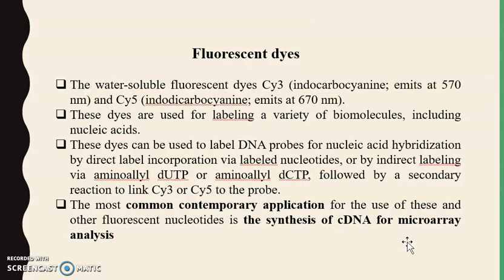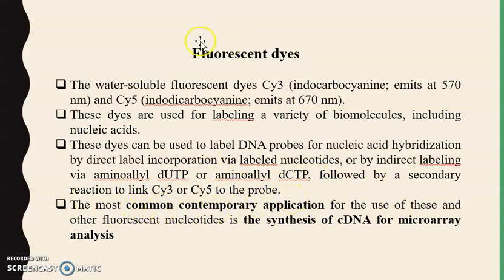Some other methods use fluorescent dyes. Ubiquitous dyes such as indocarbocyanin Cy3 and Cy5 can be used as fluorescent dyes to label a variety of biomolecules including nucleic acids. These dyes can label DNA probes for nucleic acid hybridization by direct label incorporation via labeled nucleotides, or by indirect labeling via aminoallyl-dUTP or aminoallyl-dCTP, followed by a secondary reaction to link Cy3 or Cy5 to the probe. These fluorescent dyes are used for synthesis of cDNA for microarray analysis.